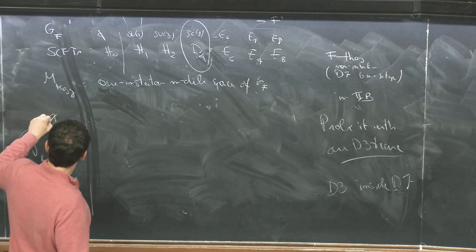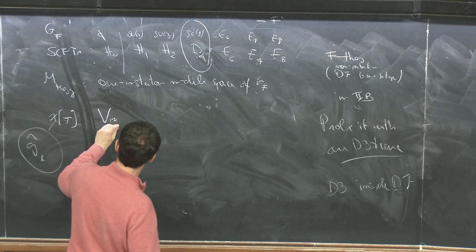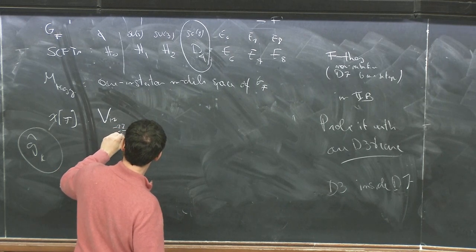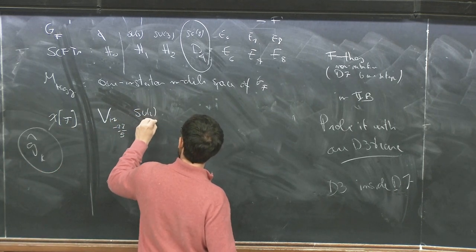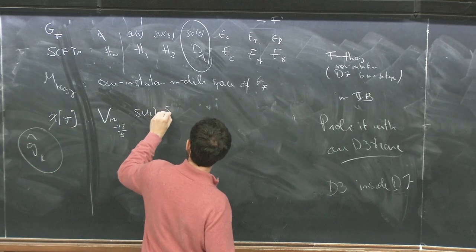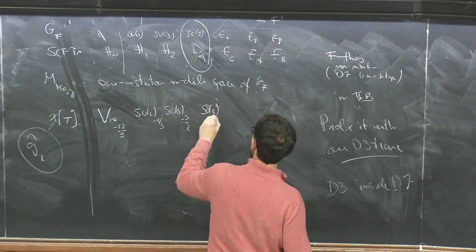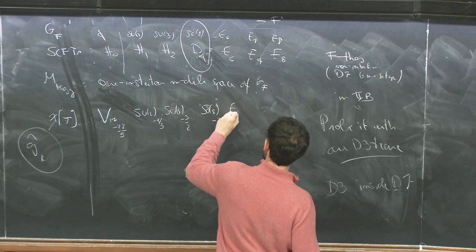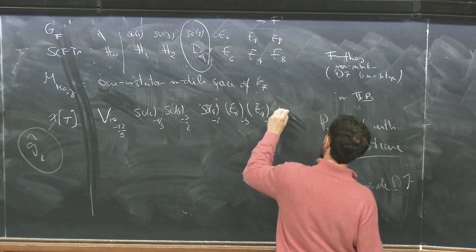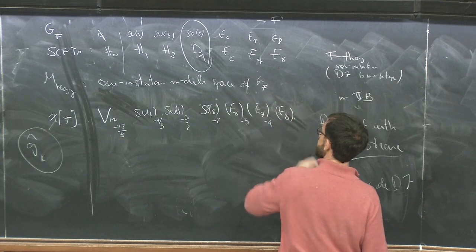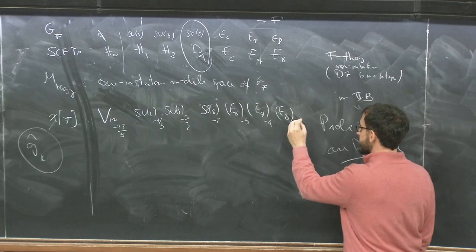What is the VOA for each of these theories? H_0 gives the Virasoro algebra at central charge minus 22/5. H_1 gives SU(2) at level minus 4/3. H_2 gives SU(3) at level minus 3/2. D_4 gives SO(8) at level minus 2. E_6 gives E_6 at level minus 3. E_7 gives E_7 at level minus 4. E_8 gives E_8 at level minus 5.